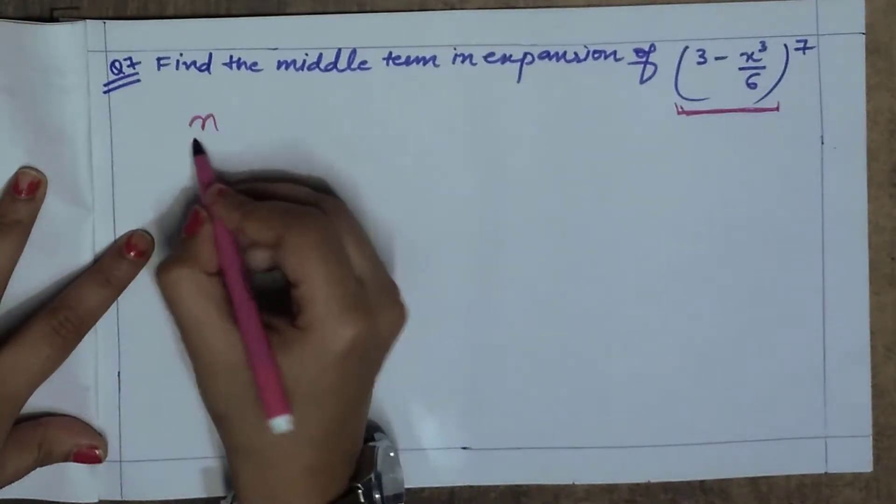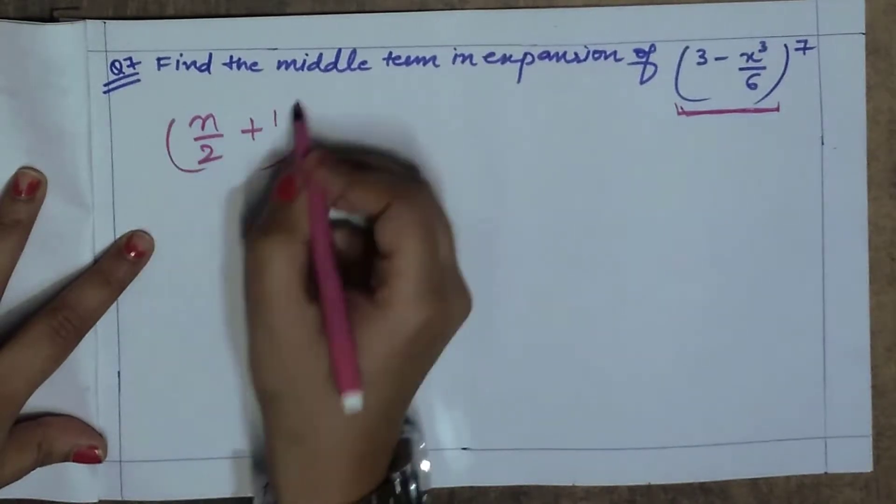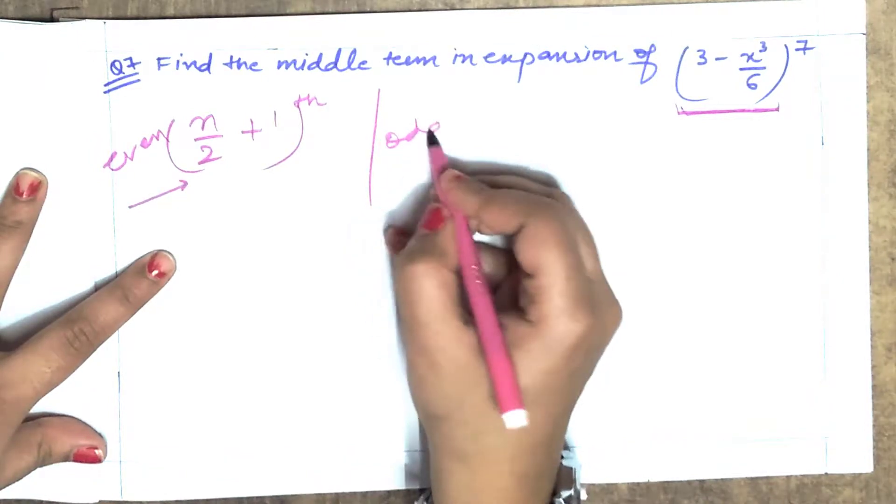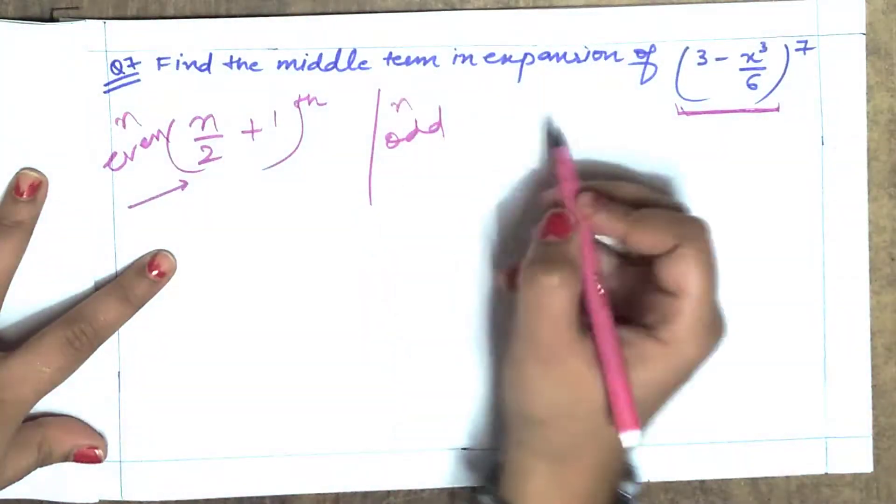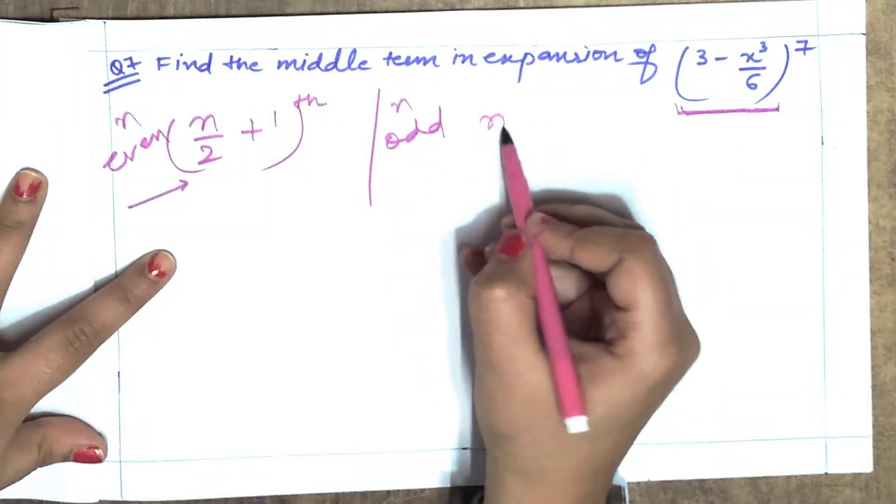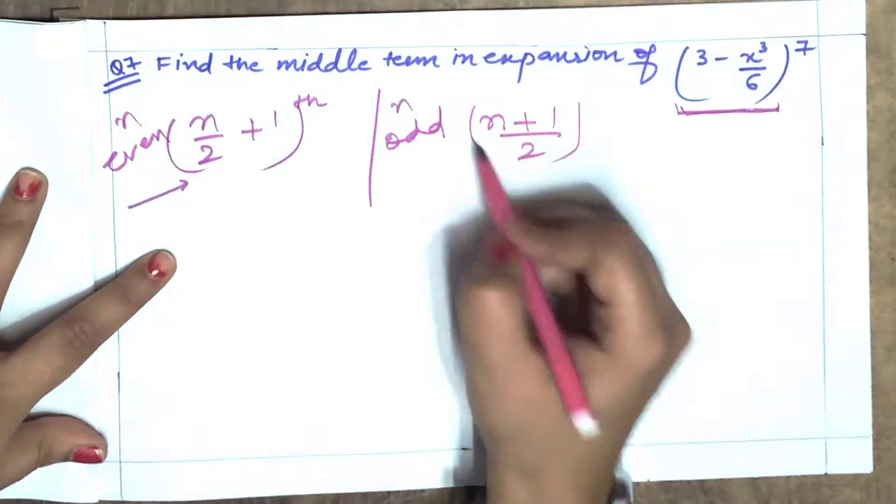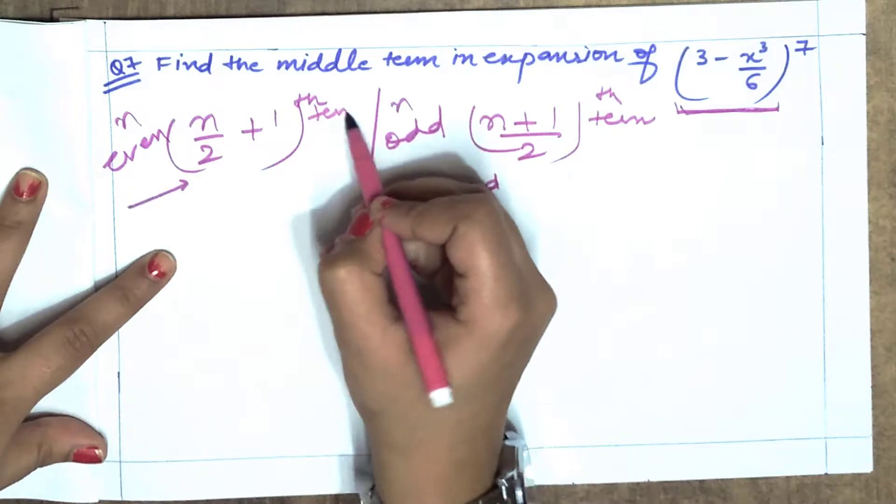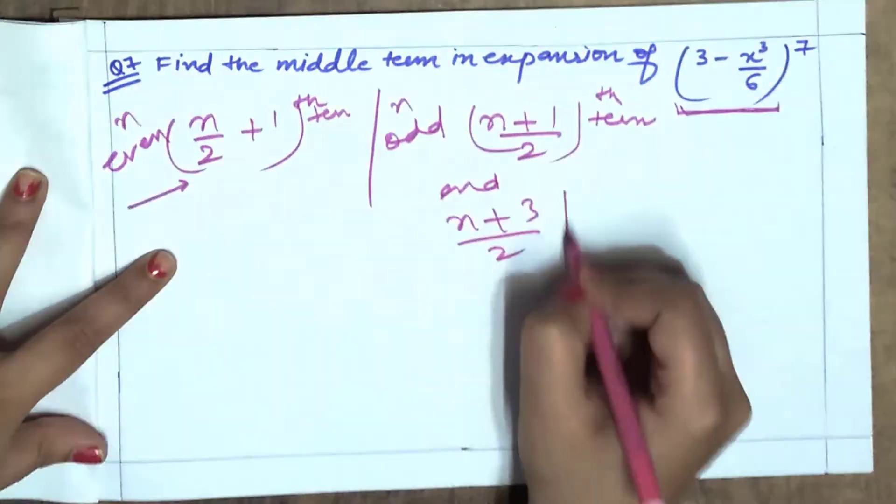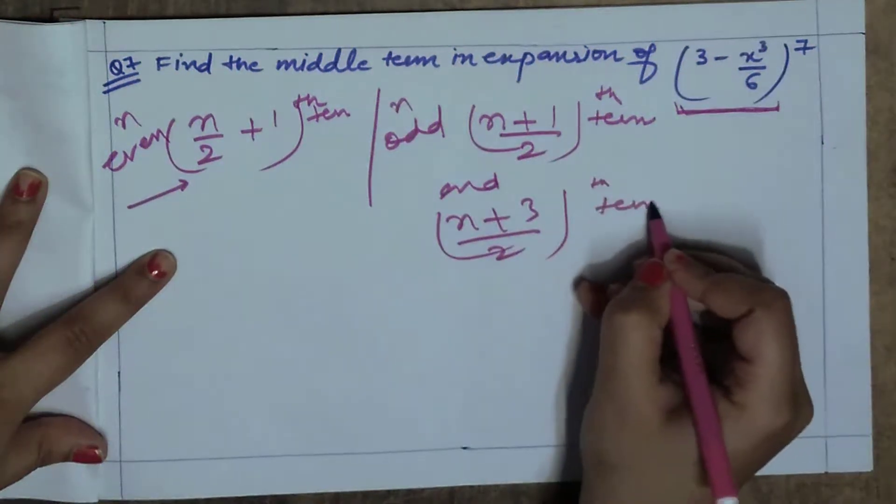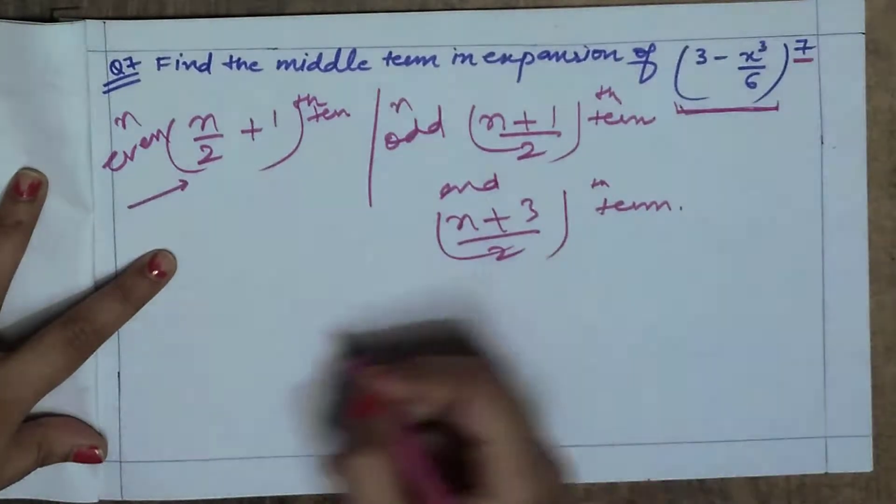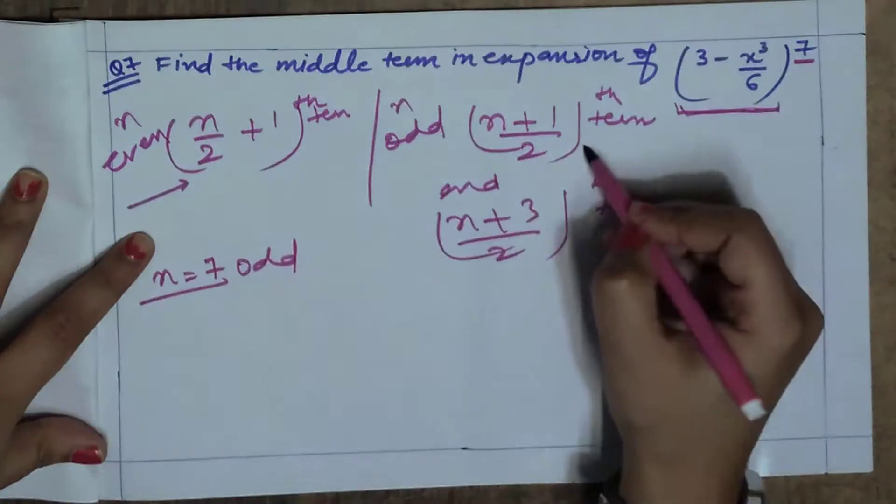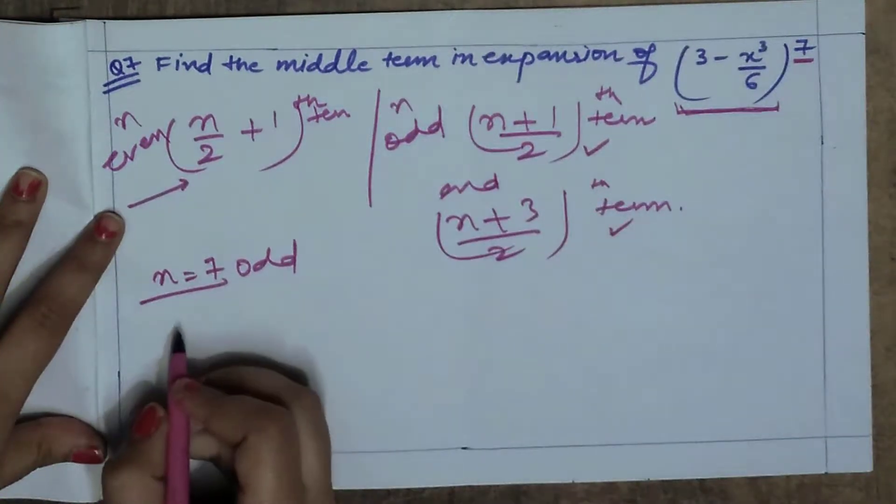So this is the formula: N by 2 plus 1th term for even powers. And if odd power N, your formula is N plus 1 by 2th term and N plus 3 by 2th term. So here, what is N value? 7, which is odd. Which means 2 terms will come as middle terms.